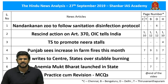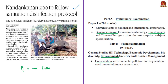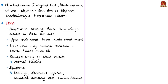The first news article talks about Elephant Endotheliotropic Herpes Virus. The news article talks about Nandan Kanan Zoological Park, located in Bhubaneswar in Odisha. The park has lost four elephants because of this Elephant Endotheliotropic Herpes Virus within a span of 30 days.